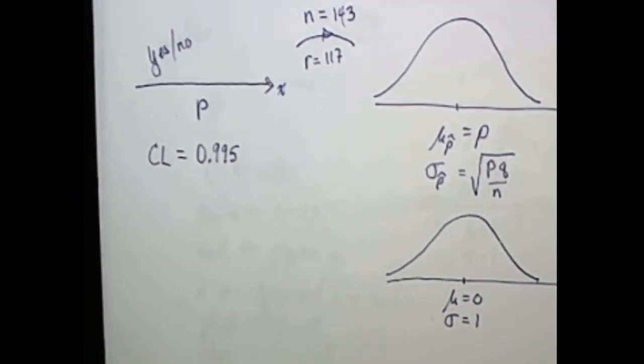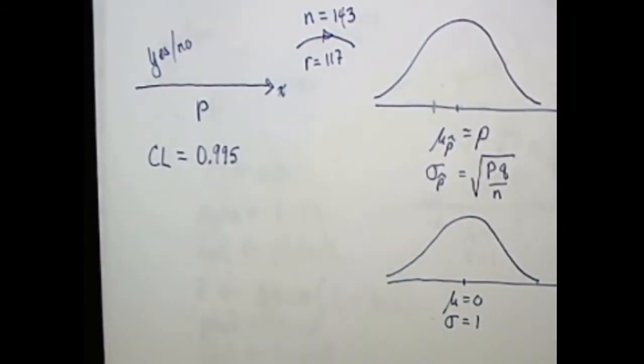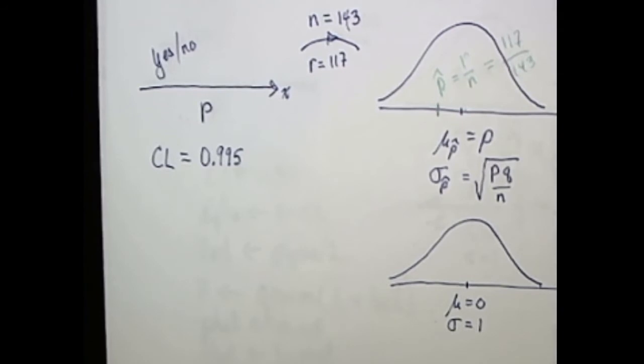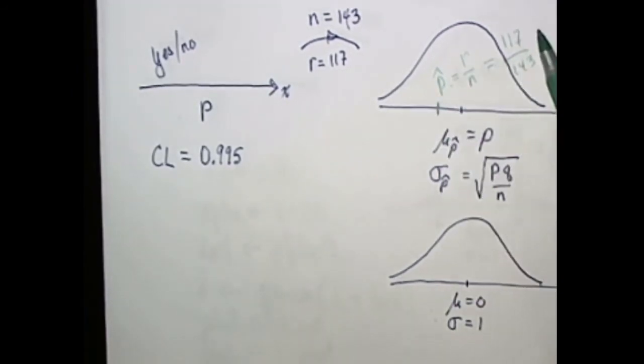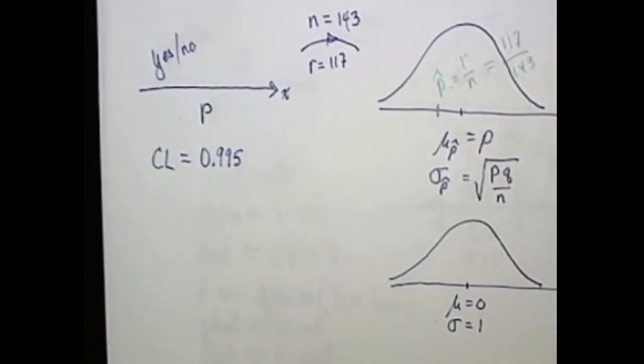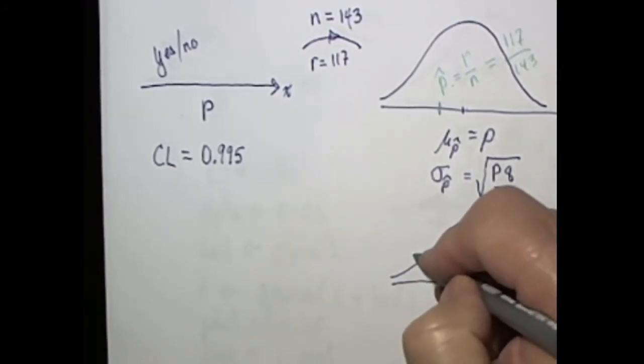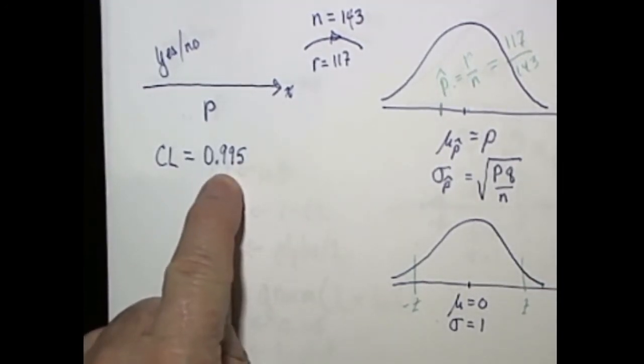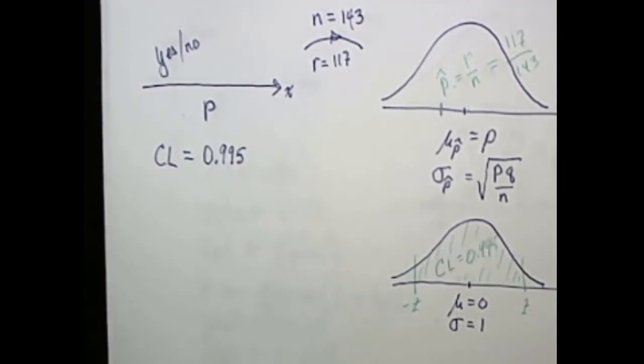Now some things that we can calculate at this particular point is the proportion of our sample, which of course is the number of successes divided by the sample size. In our particular case p hat is 117 over 143. The other thing that we can do some calculating on is we can search for this z value so that between minus z and z there is 99.5% of the population. What we want to do is build a confidence interval. So let's begin to build an R script that will help us do that job.